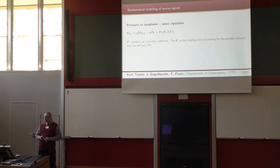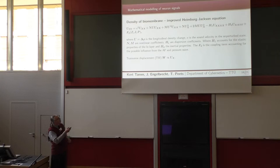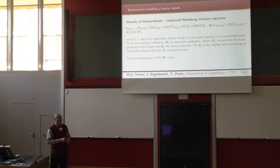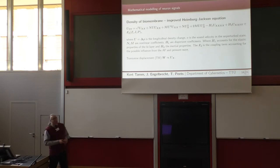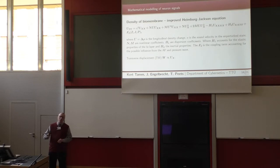For pressure, we have a classical wave equation with viscosity and some coupling term. For the improved Heimburg-Jackson equation, the first dispersive term is for the elastic properties of the biomembrane, and the second dispersive term is for the inertial properties of the biomembrane. In experimental observations, what people usually measure is the transverse displacement of the biomembrane, but this equation is for longitudinal density change. So we take some inspiration from the theory of rods, noting that the transverse displacement is usually proportional to the longitudinal density change, and that gives us what we need.